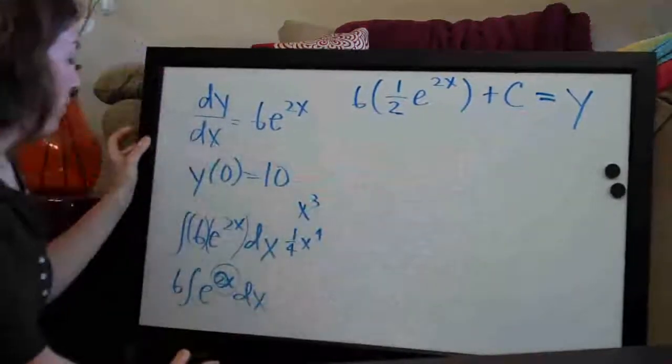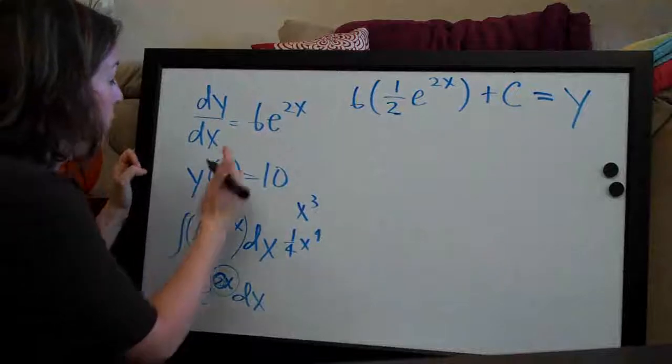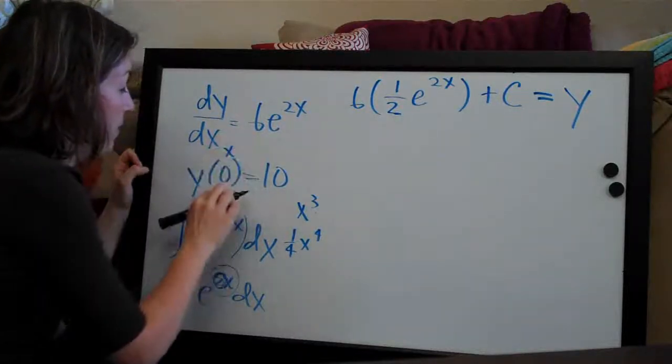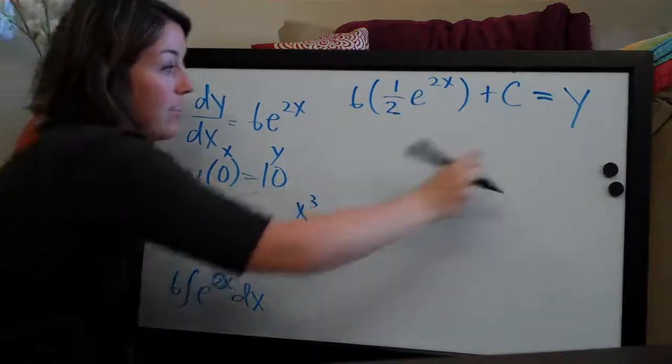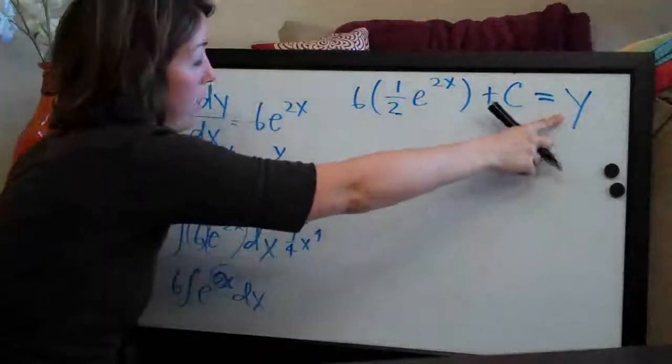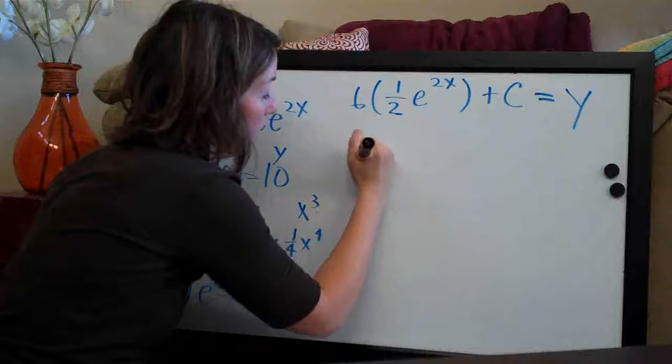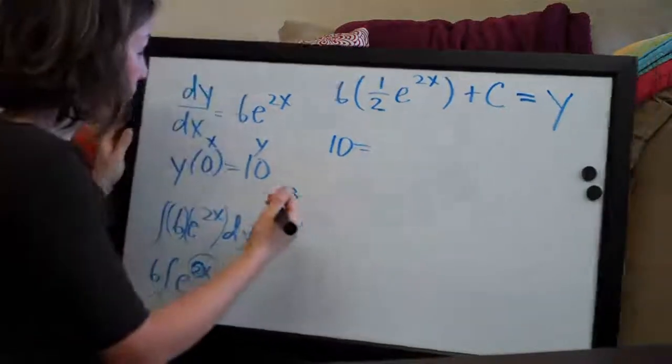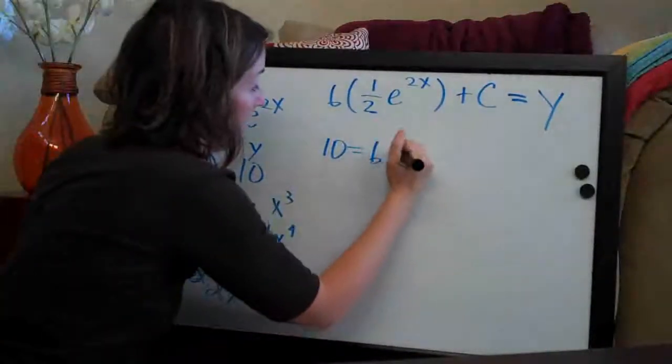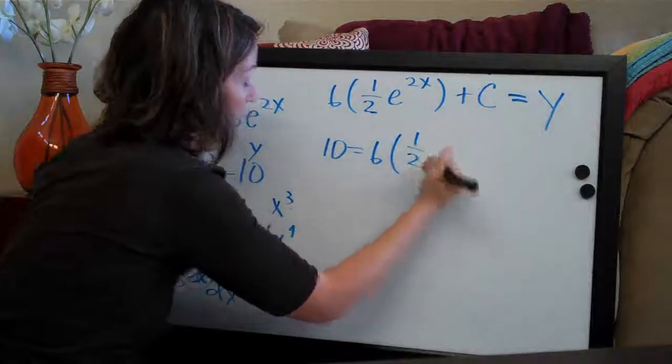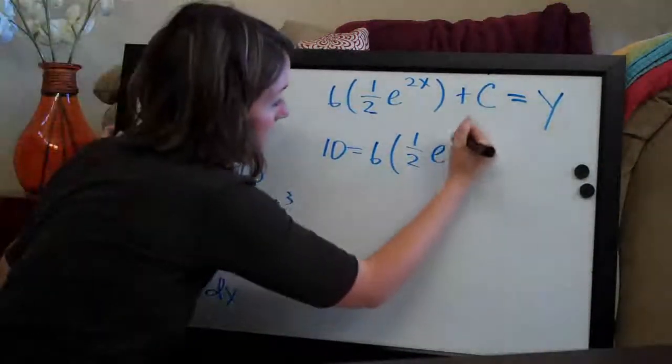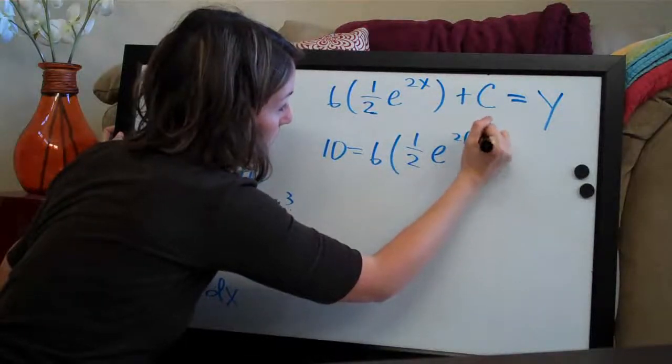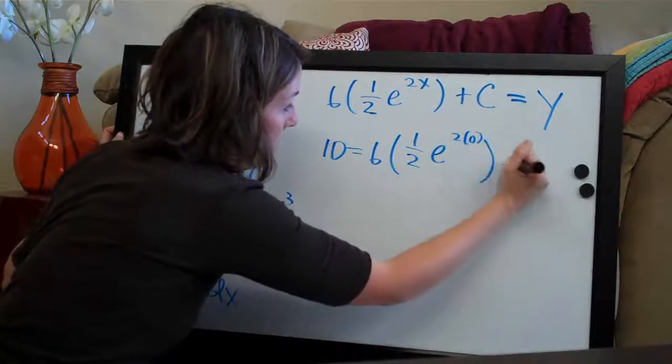The reason we do that is so we have a place to plug in both numbers. We're going to plug in 0 for x and 10 for y. You have to have a place to put this 10, so you always need a y. So we're going to say 10 = 6 × (1/2)e^(2×0) + c.